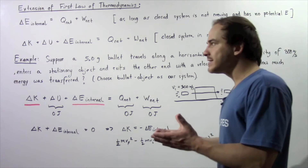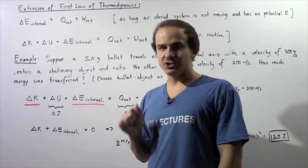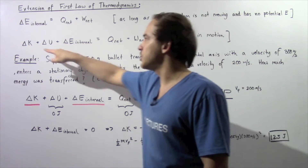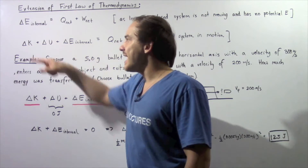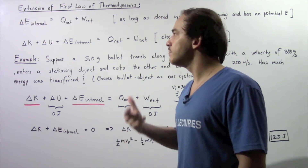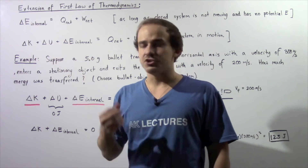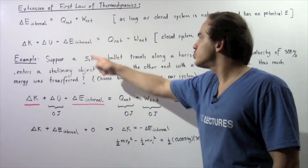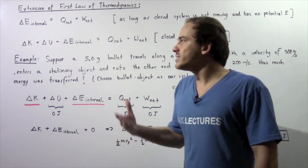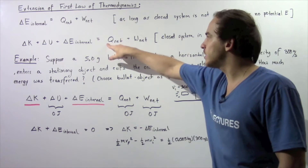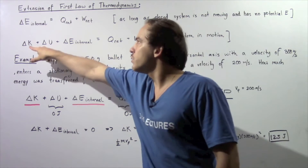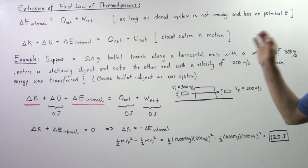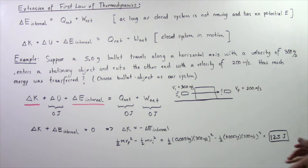If our closed system is in motion and has potential energy, then the equation becomes: the change in kinetic energy of our moving closed system, plus the change in potential energy, plus the change in internal energy of our system, is equal to the total amount of energy that flows in or out of our system given by Q net plus W net. This is the extended version of the first law of thermodynamics, and it works for a closed system in motion.